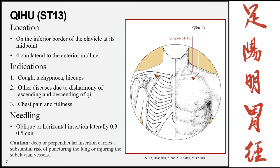The next point is Qihu, Stomach 13, located on the inferior border of the clavicle at its midpoint. Similar to the previous point, find the midpoint of the clavicle and go to its inferior border — 4 cun lateral to the midline. This point can be used locally for cough, tachypnea, and hiccups, for other diseases due to disharmony of ascending and descending qi, and for chest pain and fullness.